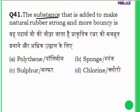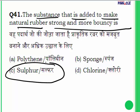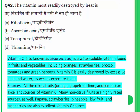Question 41: the substance added to make natural rubber strong and more bouncy is sulfur.